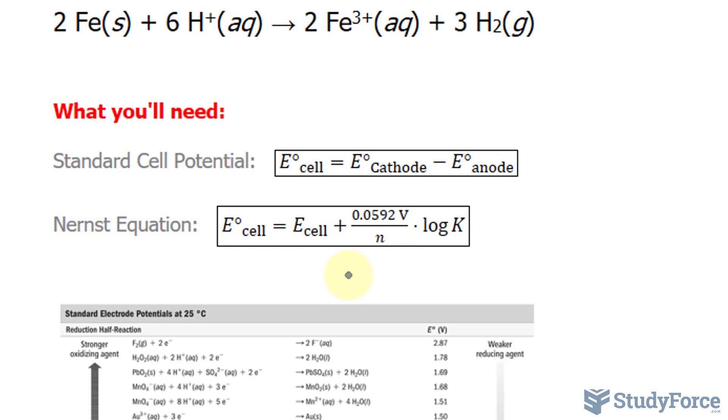N represents the number of electrons that are cancelled out in the half reactions, that will be found soon. And K represents the equilibrium constant, and if it wasn't at equilibrium, this is replaced with Q as the reaction quotient.